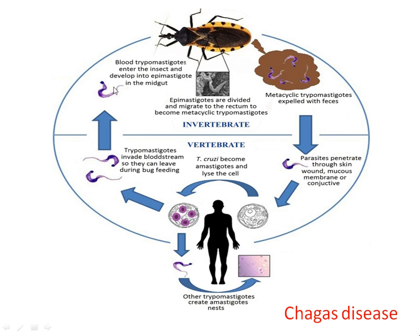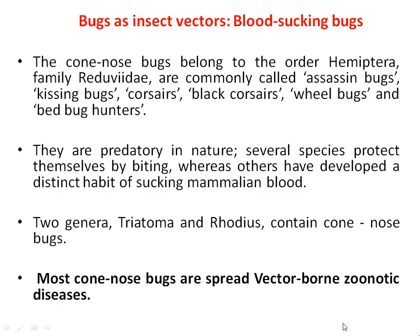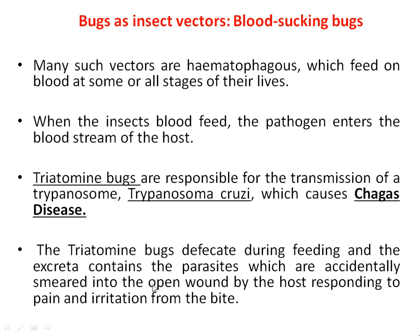The trypomastigotes again enter the body of the insect when the kissing bug bites again. In this way, half the life cycle of the infectious agent Trypanosoma cruzi completes in the invertebrate host, and half takes place in the human being, causing Chagas disease. The parasites are accidentally smeared into wounds and try to enter the body through the wound and mucous membrane, penetrating into the bloodstream.